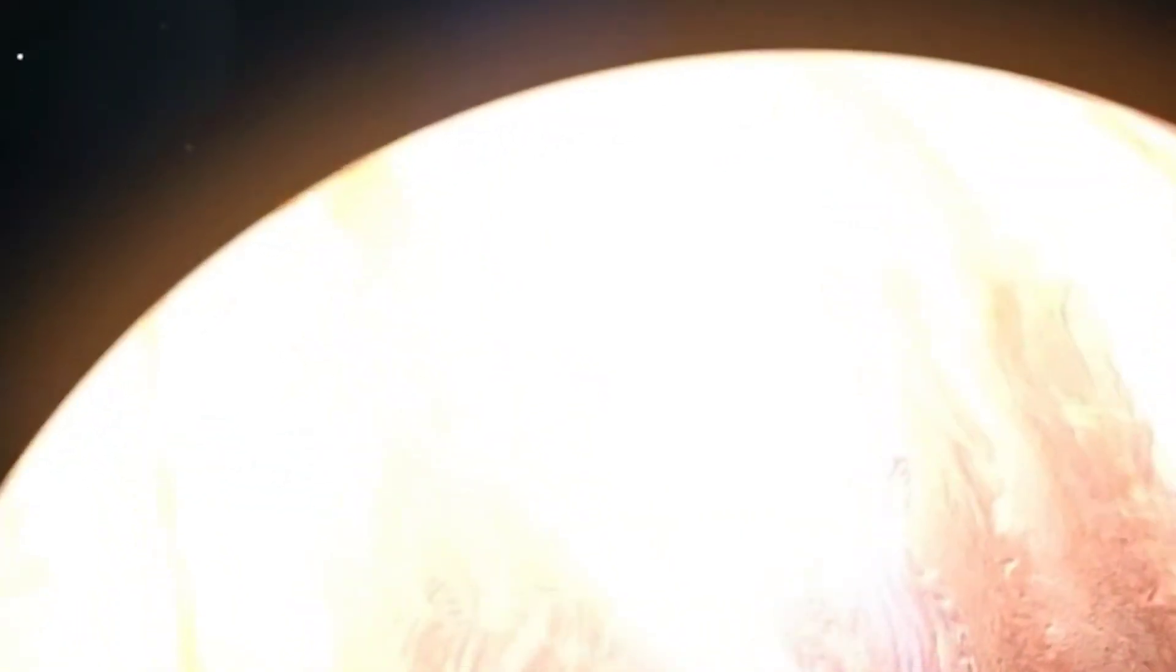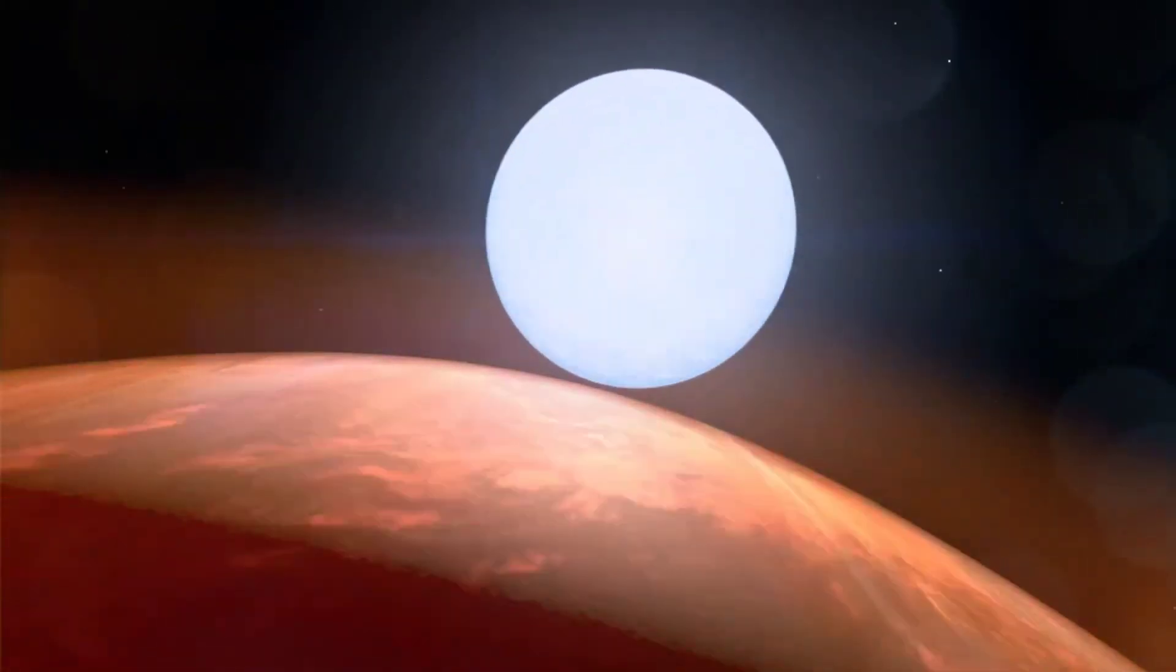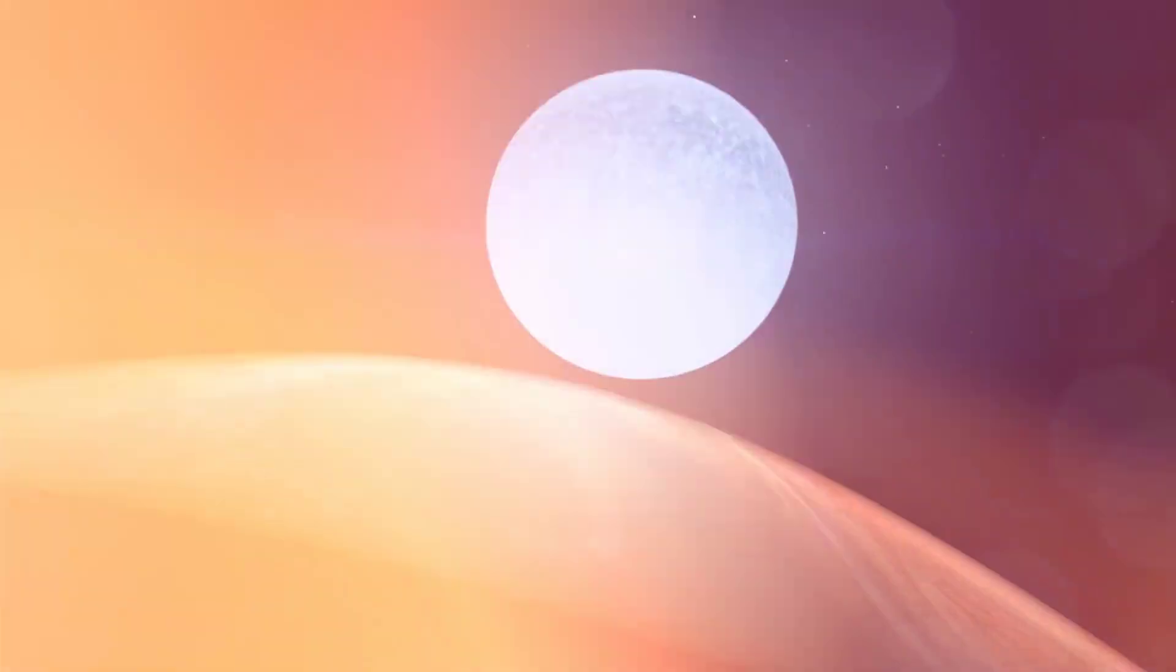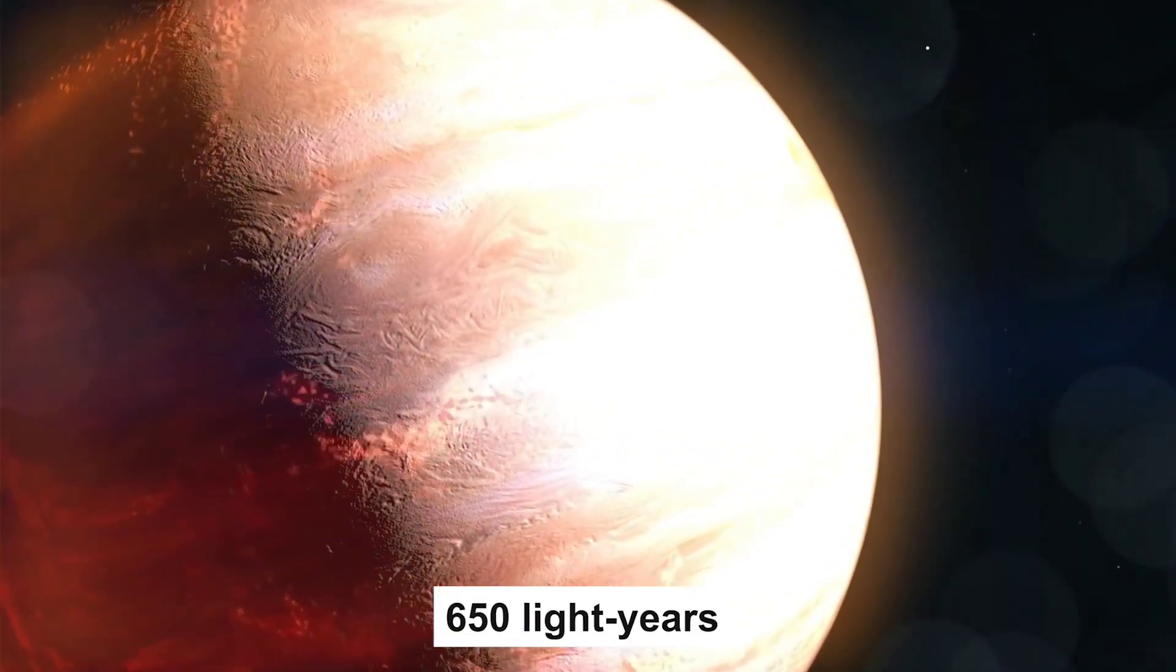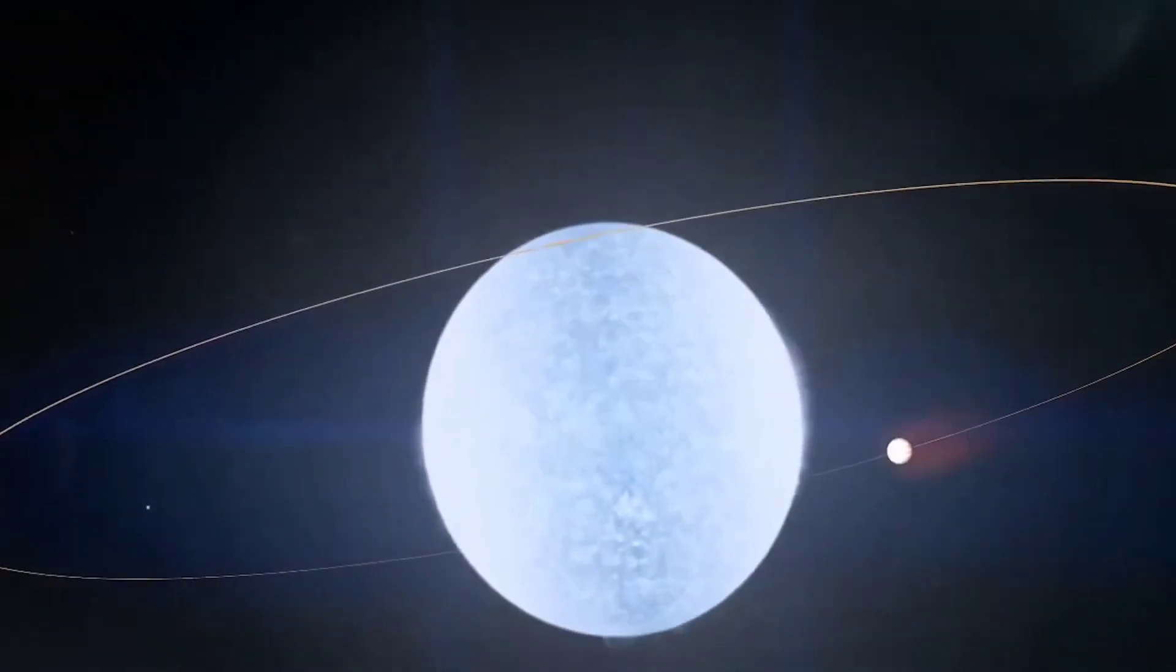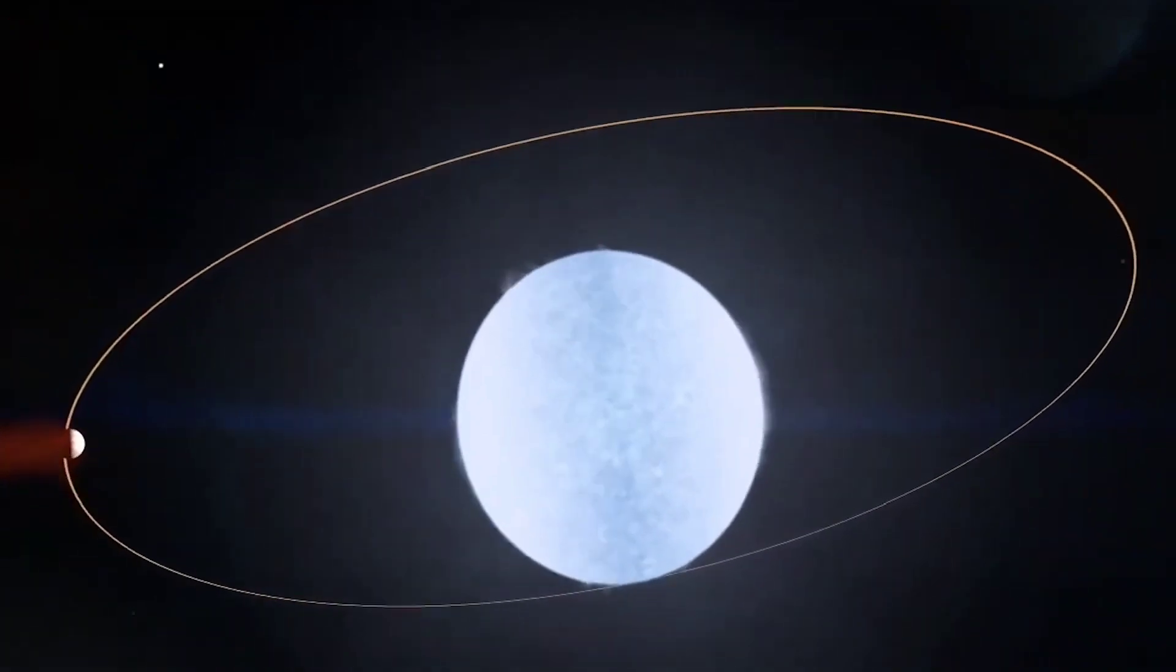The next exoplanet on my list is the extremely hot KELT-9b. KELT-9b is a 300-million-year-old gas giant exoplanet in the constellation Cygnus, some 650 light-years distant. It revolves around KELT-9, one of the hottest and brightest stars known to science, with temperatures exceeding 10,000 Kelvin.